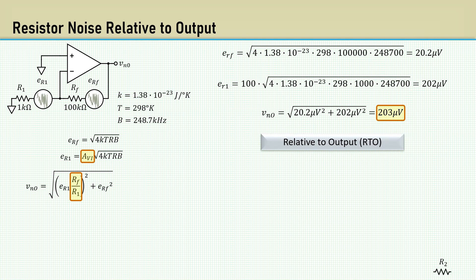What if we were to add R2 to the non-inverting input? We would have to multiply its noise by the non-inverting gain of 101 to include it. This seems a bit complicated, doesn't it?